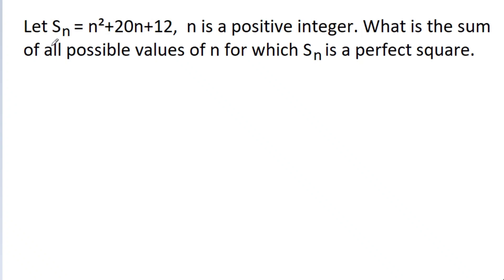In this video, we have given that Sn is equal to n squared plus 20n plus 12, where n is a positive integer. Then we have to find the sum of all possible values of n for which Sn is a perfect square.